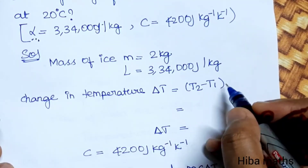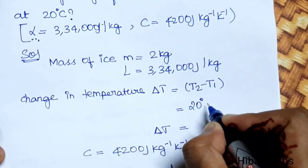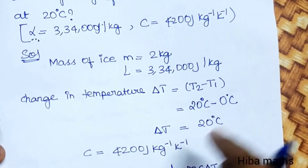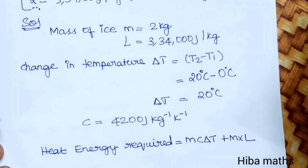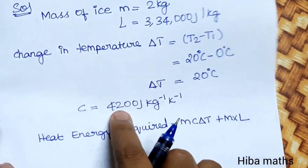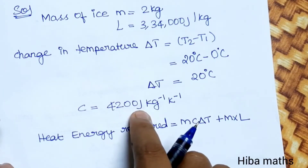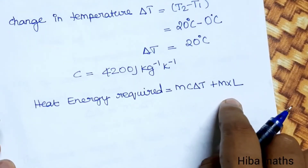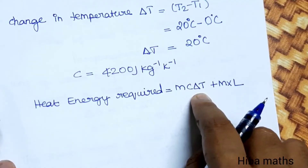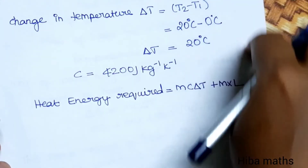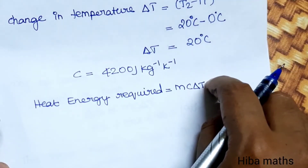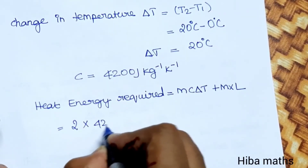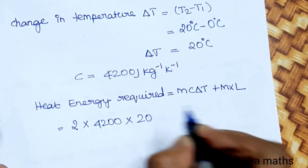T2 is 20 degrees Celsius and T1 is 0 degrees Celsius, so 20 minus 0 is 20 degrees Celsius change in temperature. The specific heat capacity of water is 4200 joules per kilogram per Kelvin. The heat energy required uses the formula: M into C into delta T plus M into L. Substituting: M is 2 kg, C is 4200, and delta T is 20 degrees Celsius.